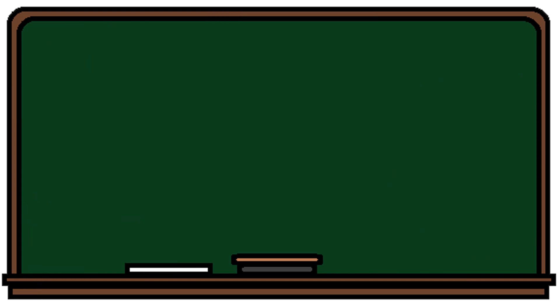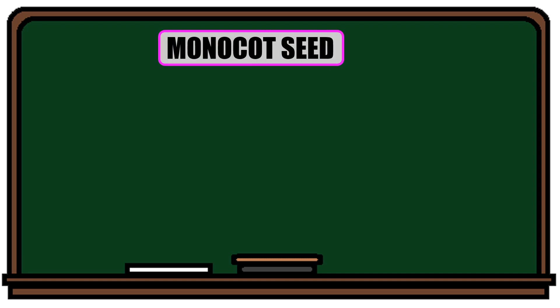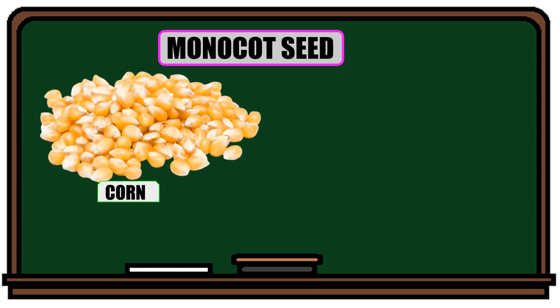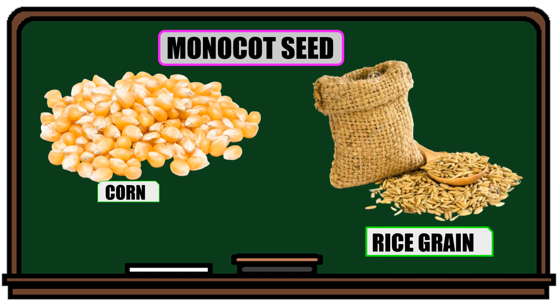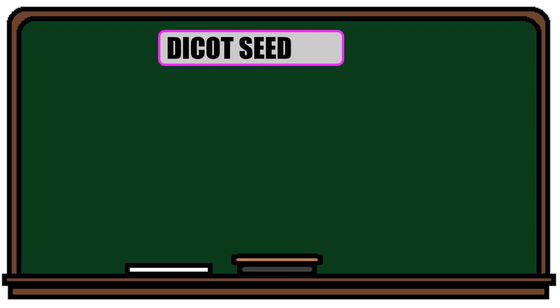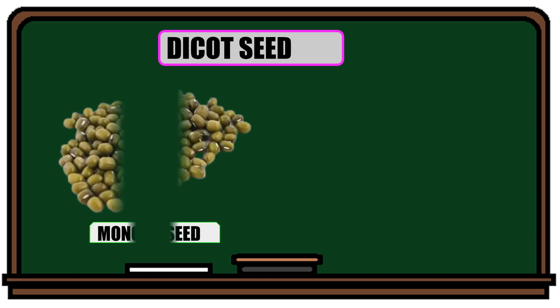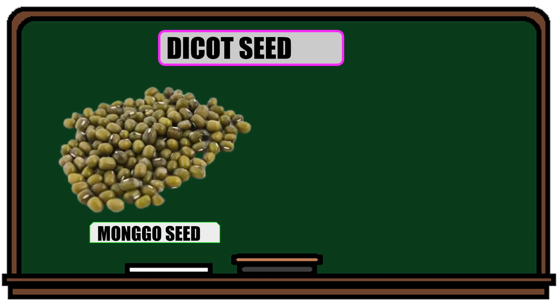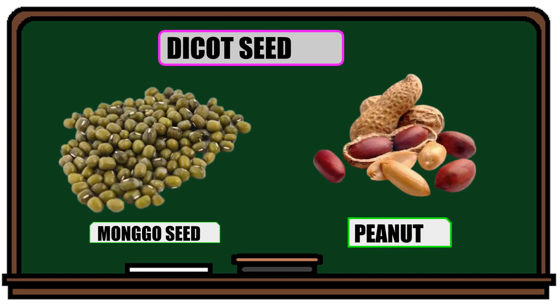Here are some examples of monocot seeds. Monocot seeds have one cotyledon — we have corn and rice grain. And these are dicot seeds. Dicot seeds have two cotyledons — examples include peanut and many other seeds with two cotyledons.